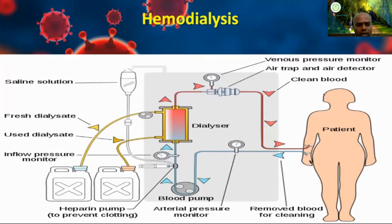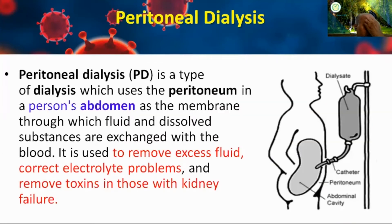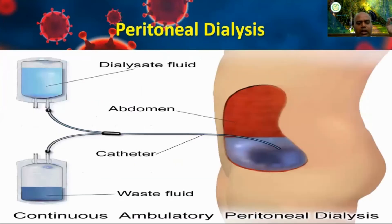I will show you the videos so you can understand more. In the dialysis machine, there is a heparin pump and a blood pump — this is how cleaning is done. There is a purification process using dialysis with saline, inflow pressure monitoring, venous pressure monitoring, and an air detector. For peritoneal dialysis, a catheter is placed in the abdomen. The dialysis fluid sits in the abdominal cavity, and waste fluid is removed through the catheter.